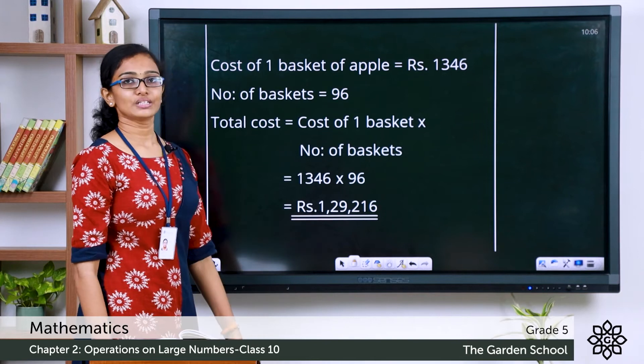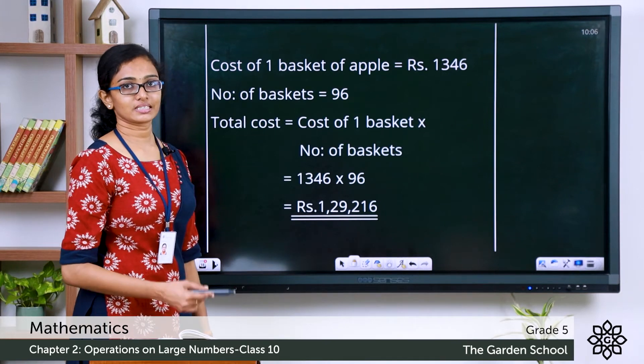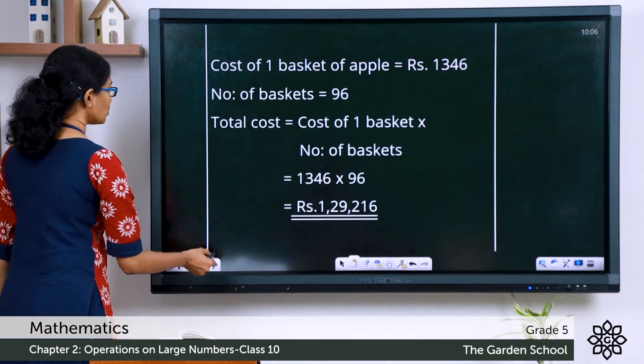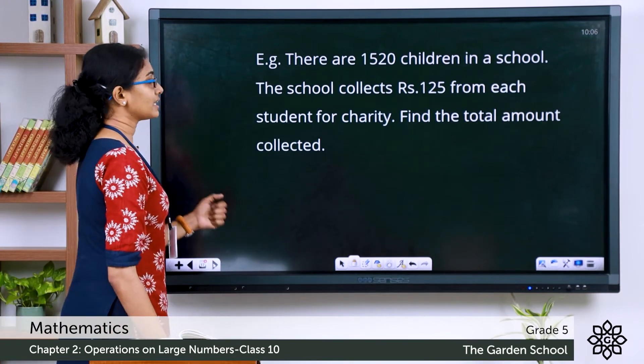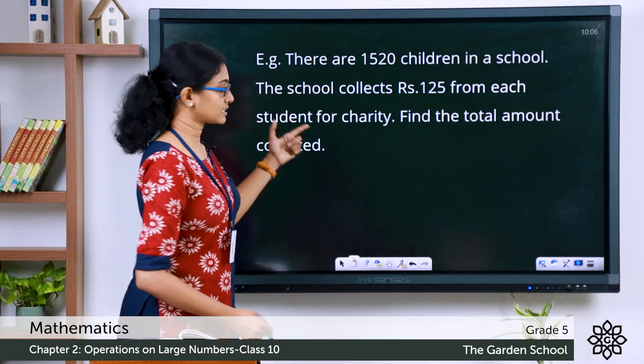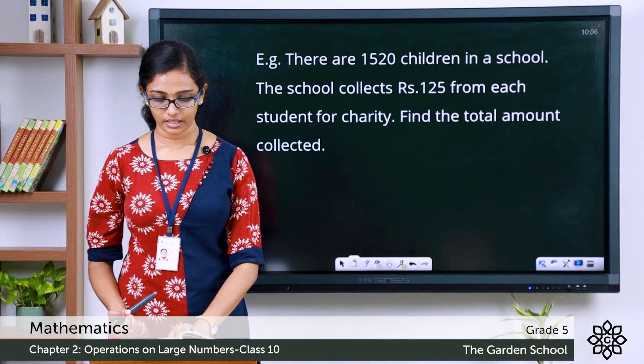So the total cost of 96 baskets is equal to rupees 1,29,216. I hope that is clear. Let's look at one more example.